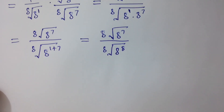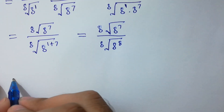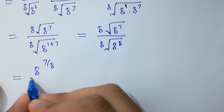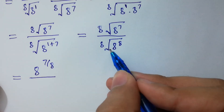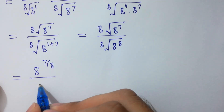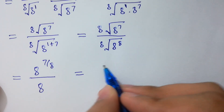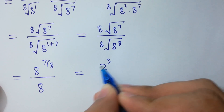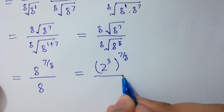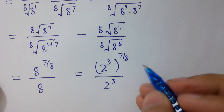Simplifying again, we can write the 8th root of 8 to the power 7 as 8 to the power (7/8), and the 8th root of 8 to the power 8 equals 8. Next, 8 equals 2 cubed, and 7 over 8 stays as it is.